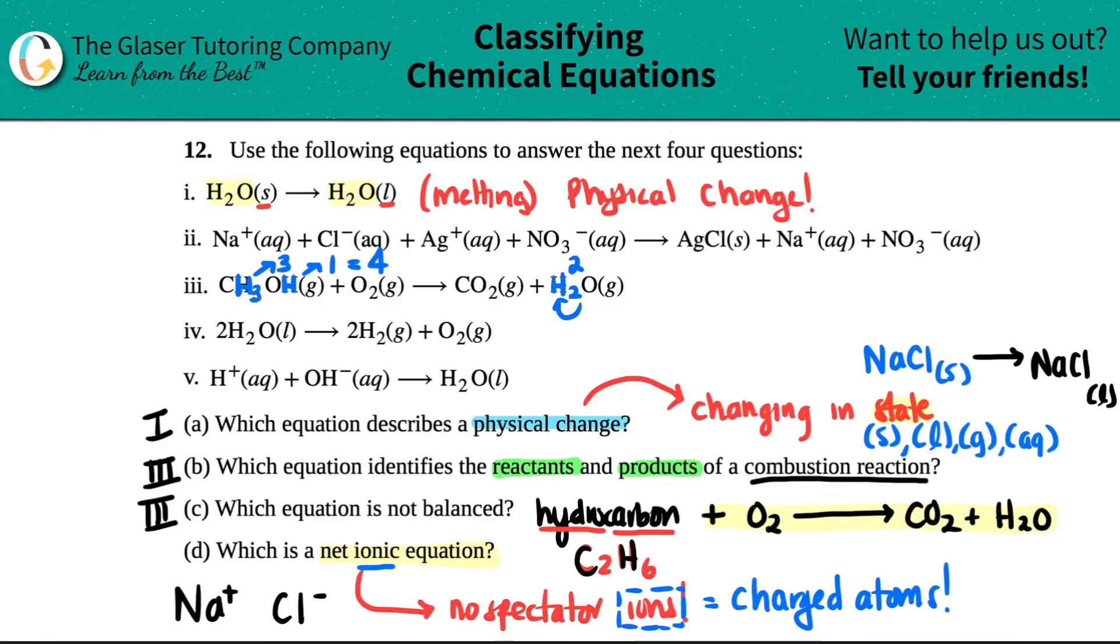Now if I look at one through five, I only notice two equations that have charges or ions: number two, as you can see there's tons of charges here in the upper right hand corner, and then number five as well, there's charges here.